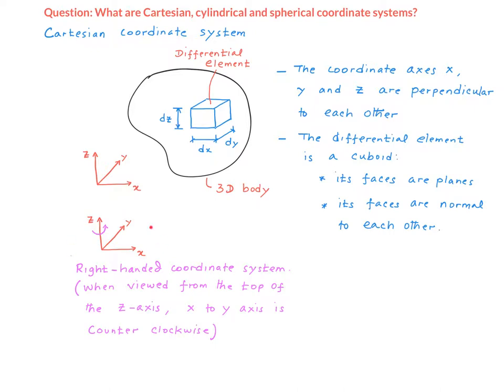Also, the most commonly used coordinate system is what is called the right-handed coordinate system. In a right-handed coordinate system, this is how the x, y, z coordinate axes are arranged.